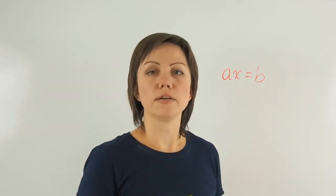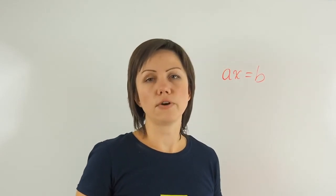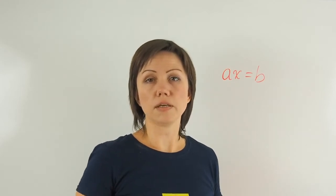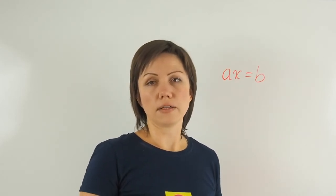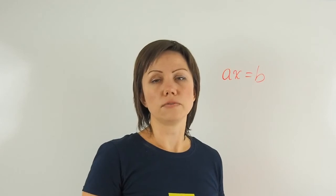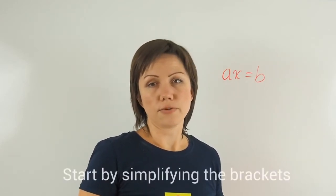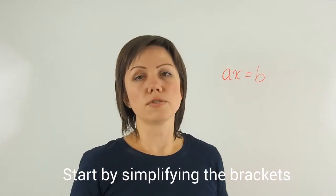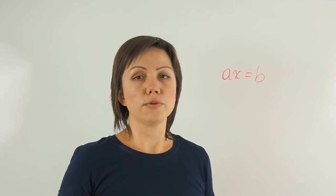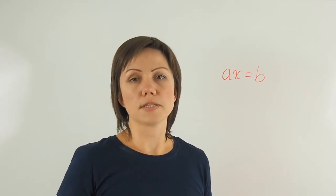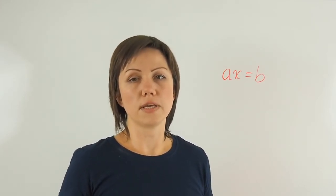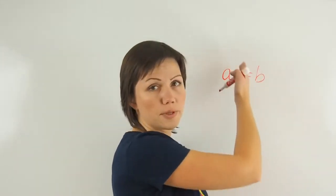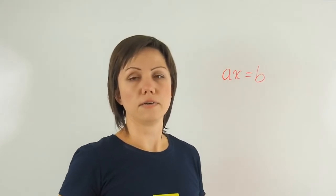In order to solve a linear equation, you need to follow certain steps. Always do reverse operation to what you see in order to move a value to the other side of the equation. Start with brackets, if you have brackets, and get rid of them by distribution. Then you will be able to group variables on one side and constants on the other side of the equation. The sides are determined by the equal sign every single time.